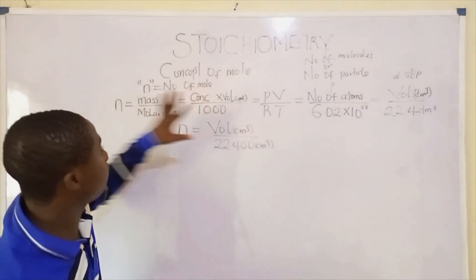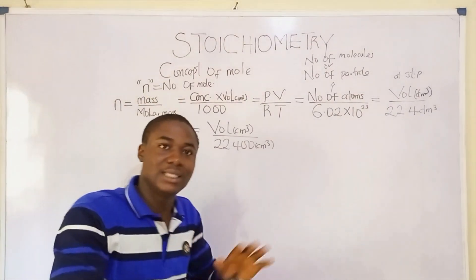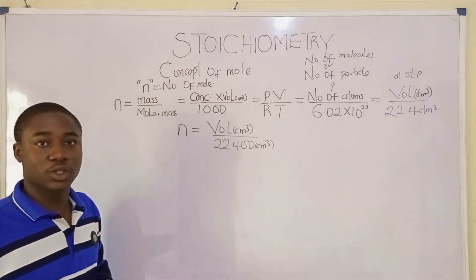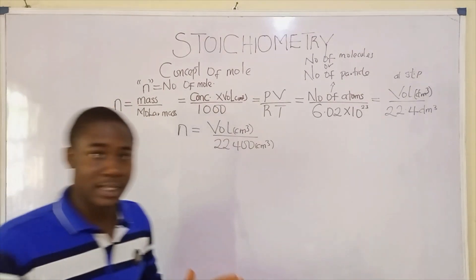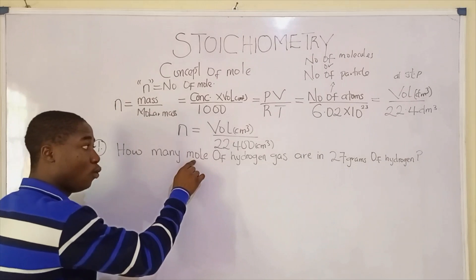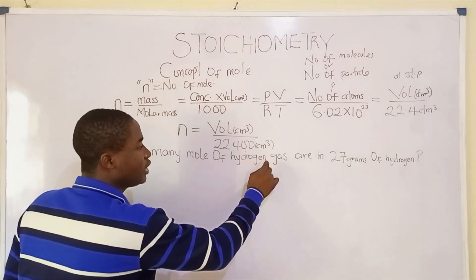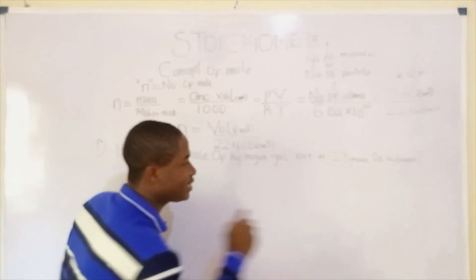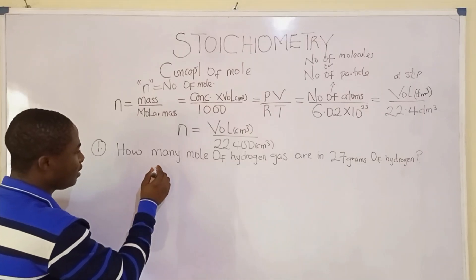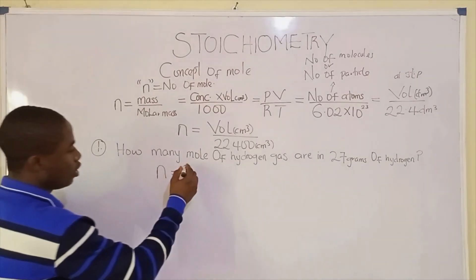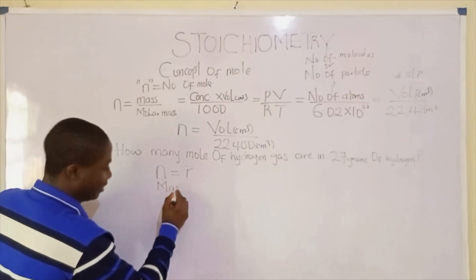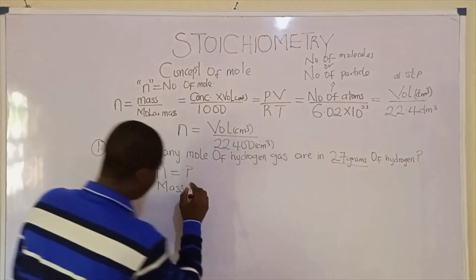So to solve practice problems on stoichiometry, those are the basic formulas that must be noted. Now let's quickly move to the first question. The question says: how many moles of hydrogen gas are in 27 grams of hydrogen? They are asking us to determine number of moles, and they've given us the mass, which is 27 grams.